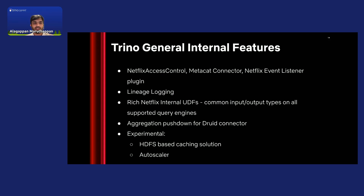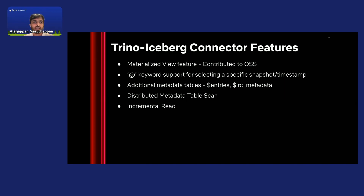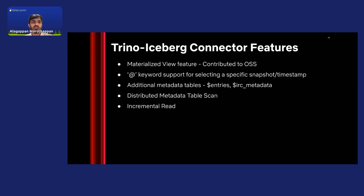We also experimented with HDFS-based caching solutions and autoscalers. Some of the Iceberg-specific features: the materialized view feature in Trino was initially developed by Netflix and later contributed back to open source. We also support certain additional keywords — for instance, we have support for an AT keyword using which users can specify a certain snapshot or timestamp. We also support additional metadata tables on top of the existing open-source Iceberg metadata tables, such as an entries table and an IRC metadata table which captures information like the snapshot ID in which a file was added and the commit timestamp associated with the file.